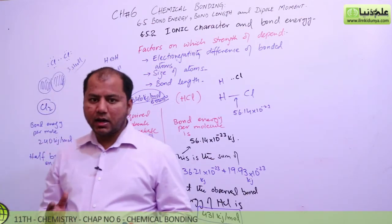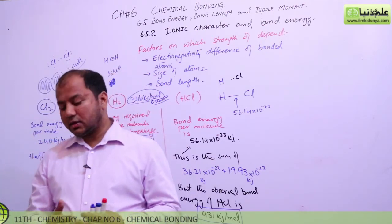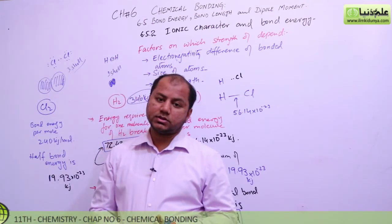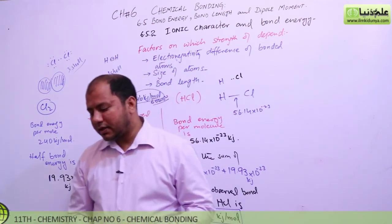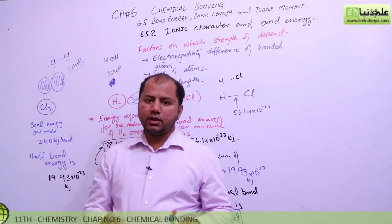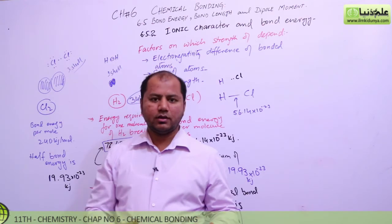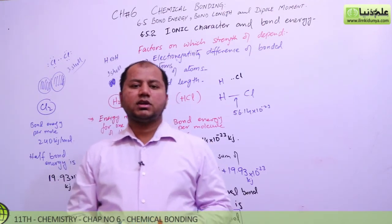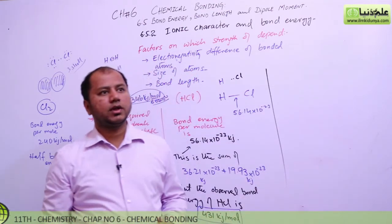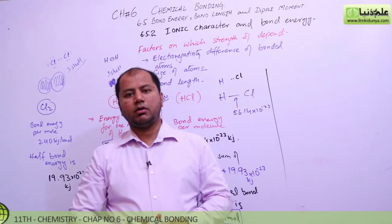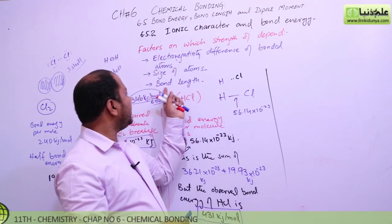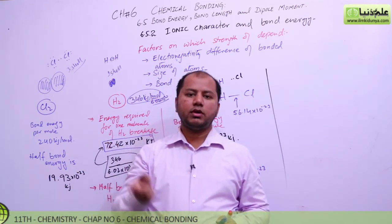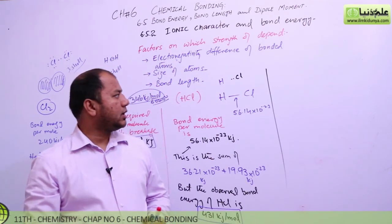If we look at carbon-carbon bonds: the triple bond has greater energy than the double bond, and the double bond has greater energy than the single bond. Bond length is exactly the opposite: the greatest bond length belongs to the carbon-carbon single bond, then double bond is shorter, and the triple bond is shortest. So there is a completely opposite relationship between bond energy and bond length — greater bond length means lower bond energy, and lower bond energy means greater bond length.